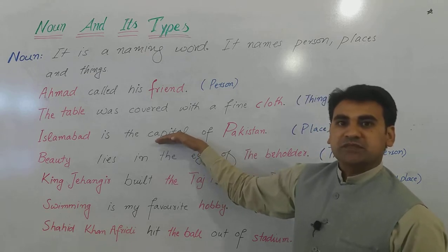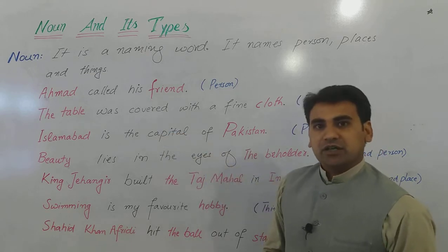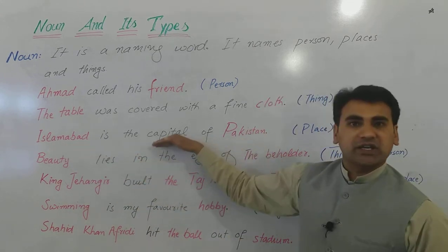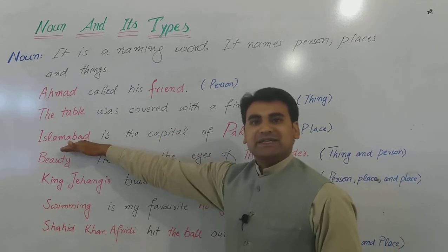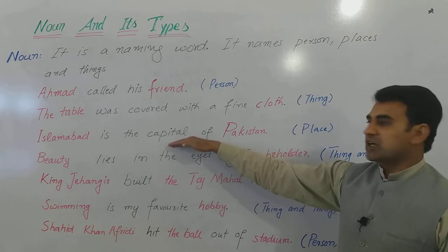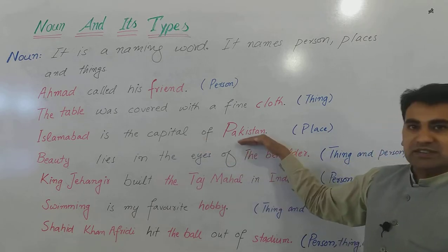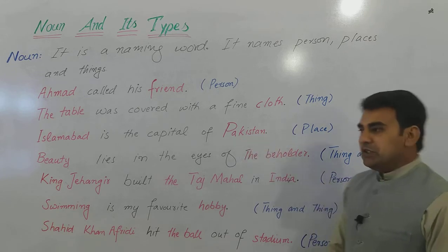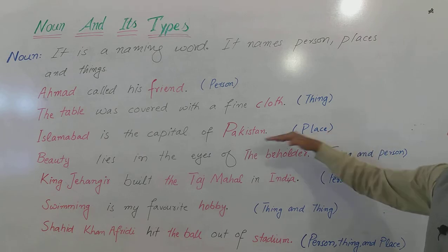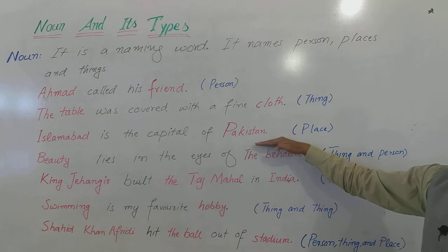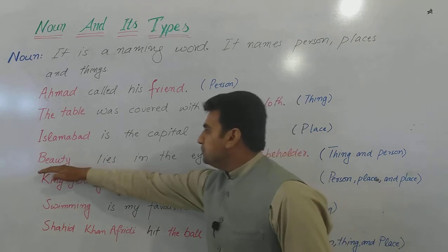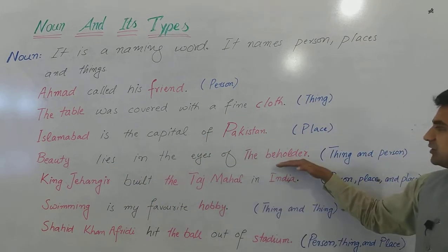'Islamabad is the capital of Pakistan.' Islamabad is a noun, Pakistan is a noun, and capital is also a noun — all three are places. Islamabad Pakistan ka darul khilaaf hai, so Islamabad is the name of a place, capital is the name of a place, and Pakistan is the name of a country, which is also a place. So in this sentence we have three places: Islamabad, capital, and Pakistan.